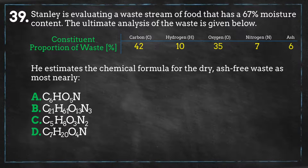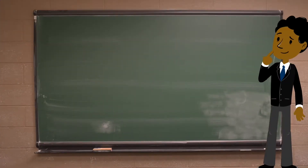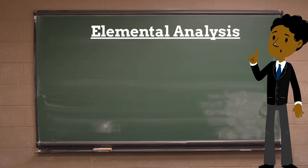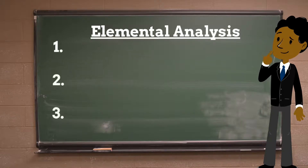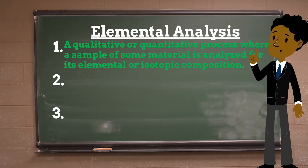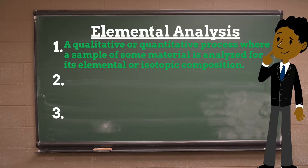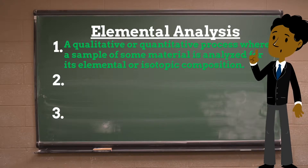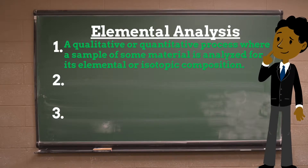Today we will discuss elemental analysis. Elemental analysis is a process where a sample of some material is analyzed for its elemental and sometimes isotopic composition. Elemental analysis can be qualitative and it can be quantitative. Elemental analysis falls within the ambit of analytical chemistry — the set of instruments involved in deciphering the chemical nature of our world.